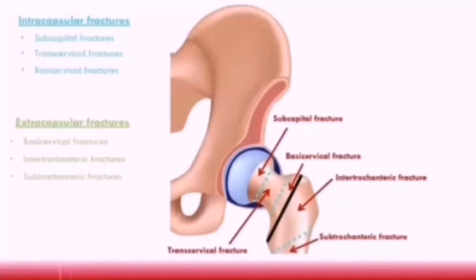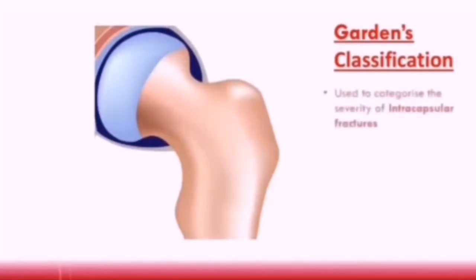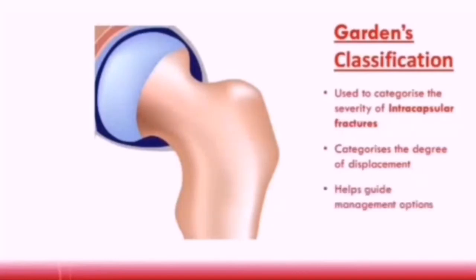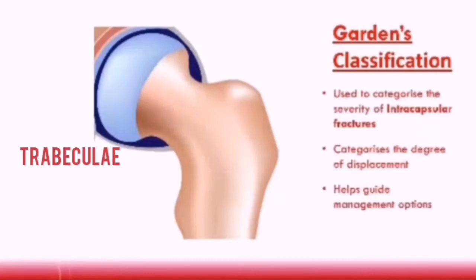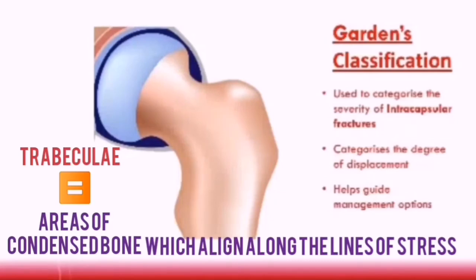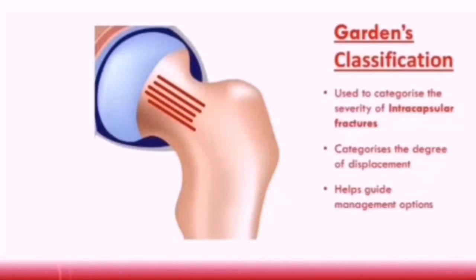There is another classification system used to determine the severity of intracapsular fractures — the Garden's classification. This system categorizes the severity of intracapsular fractures by determining the degree of displacement. Depending on the type of Garden's fracture, it can help guide management options. Trabeculi — areas of condensed bone which align along the lines of stress — can also be used to differentiate between the different types of Garden's fractures.